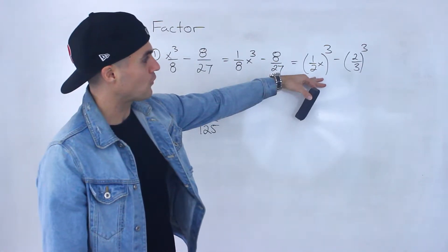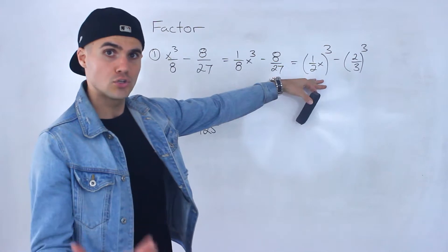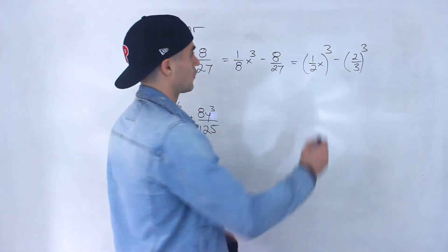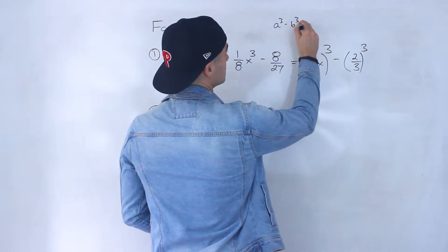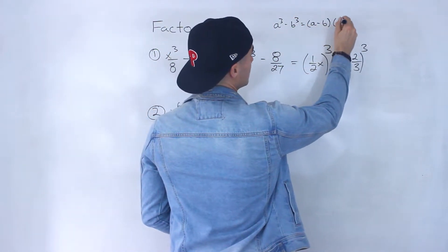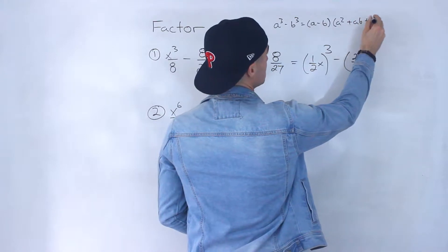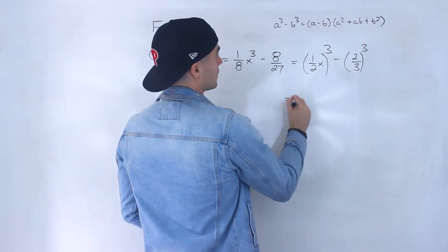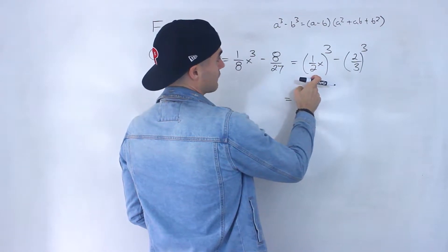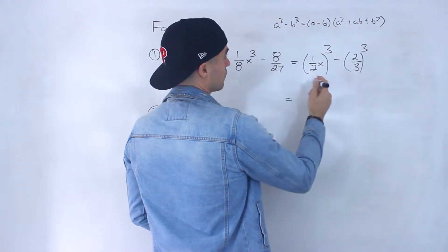And now that it's in this format, we can use the difference of cubes formula because we know that a cubed minus b cubed equals a minus b, a squared plus ab plus b squared. And so that's what I'm going to do here. So the a is this 1 half x and then the b is this 2 over 3.